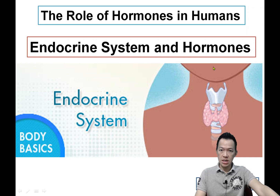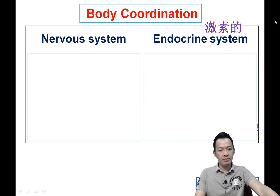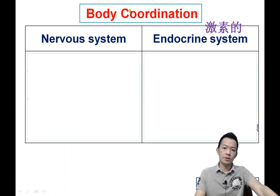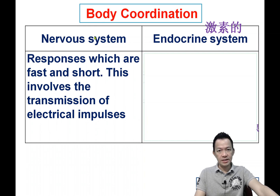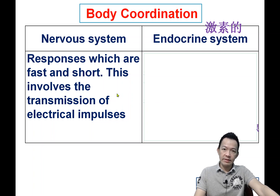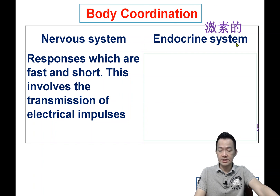I will tell you about hormones. I still remember when we talked about body coordination — our body is actually controlled by two systems. The first system is the nervous system, Shen Jing Xitong. We just finished that and talked about neurons. But beside the nervous system, our body is also controlled by another system called the endocrine system, Jisoo Xitong.